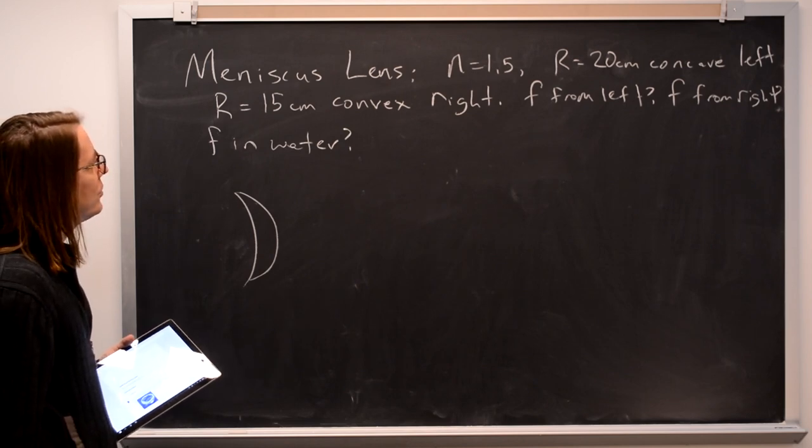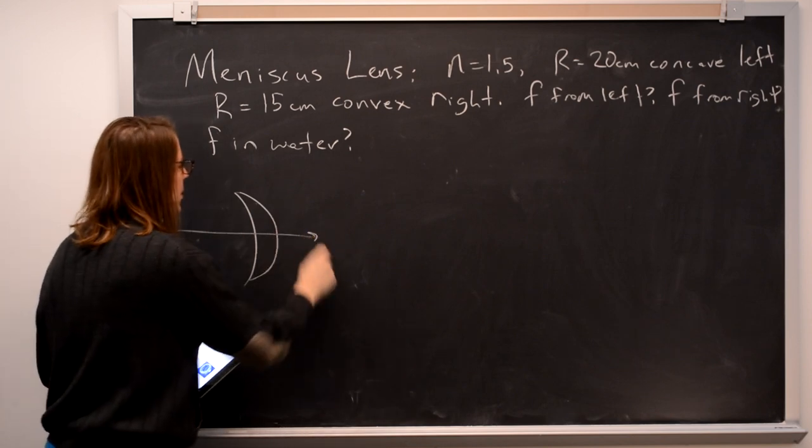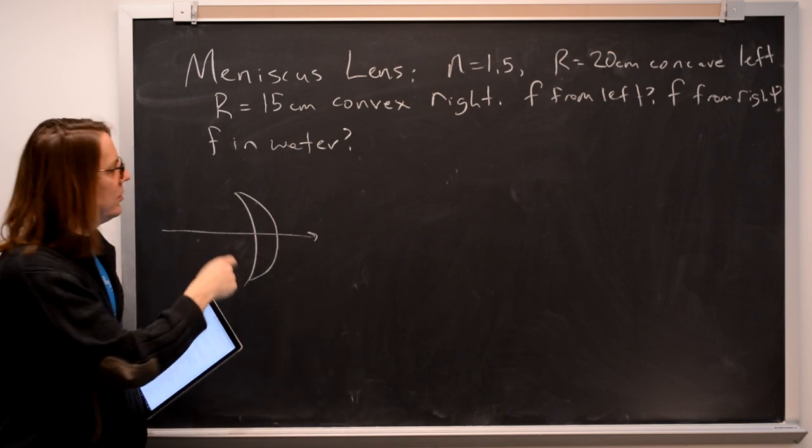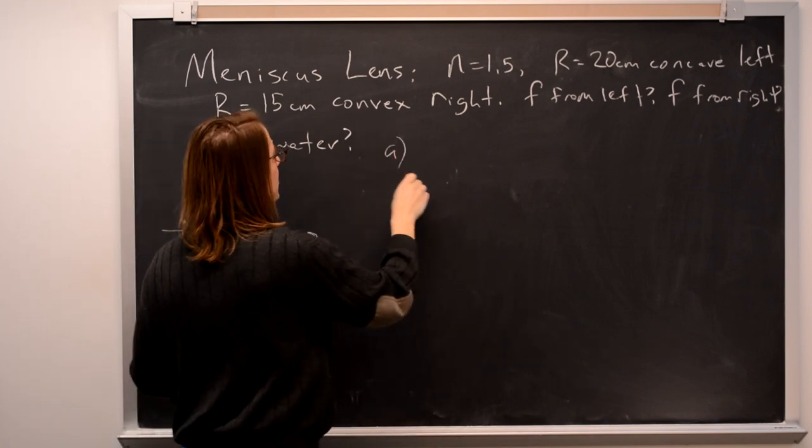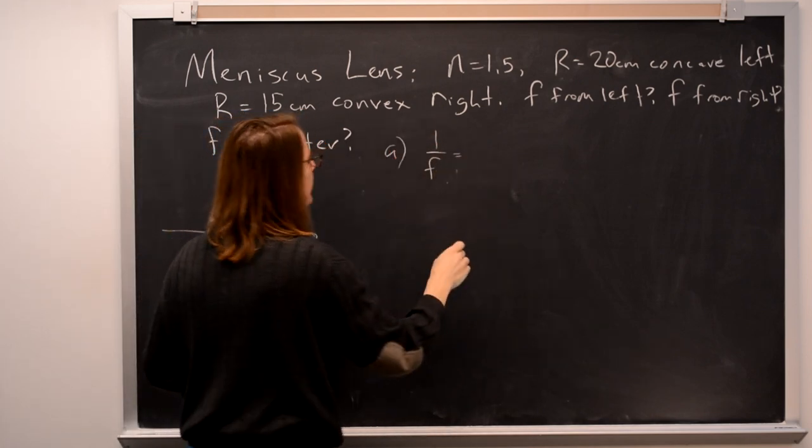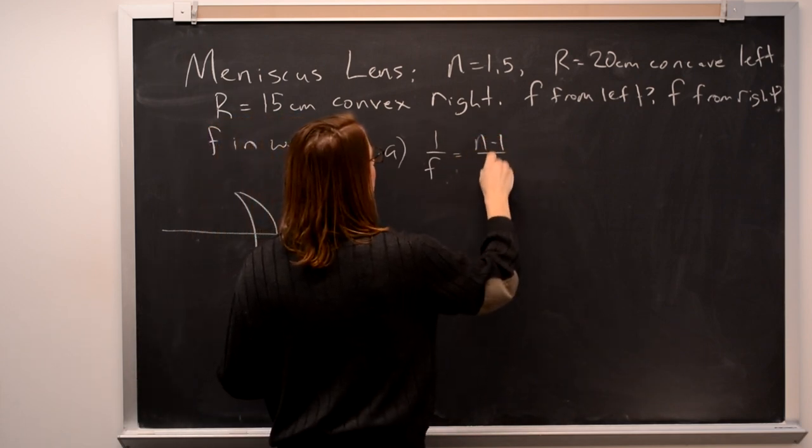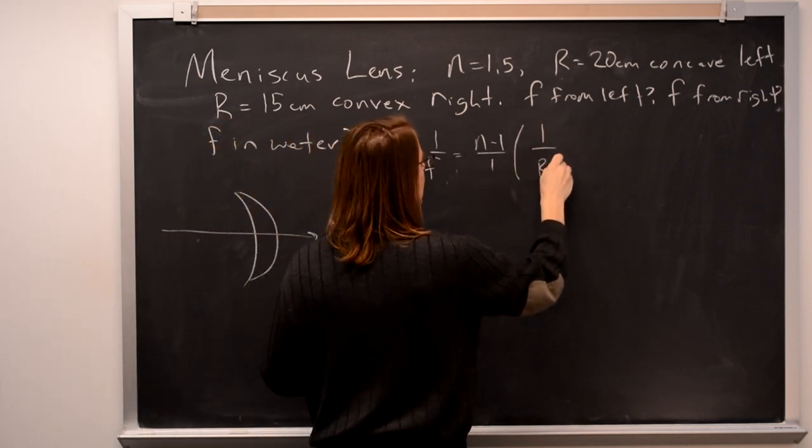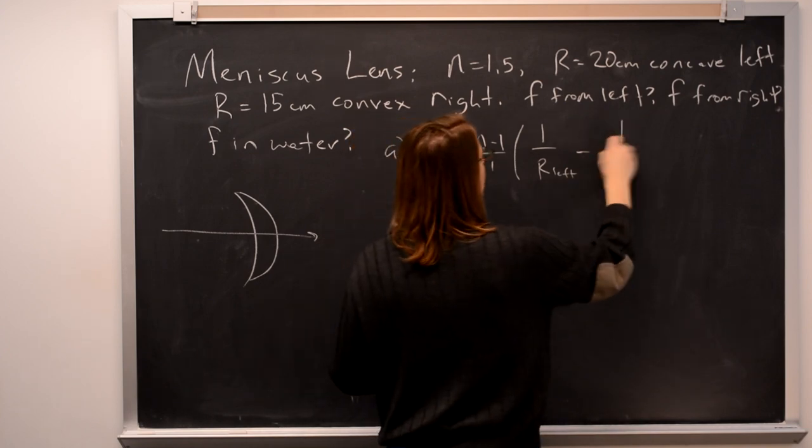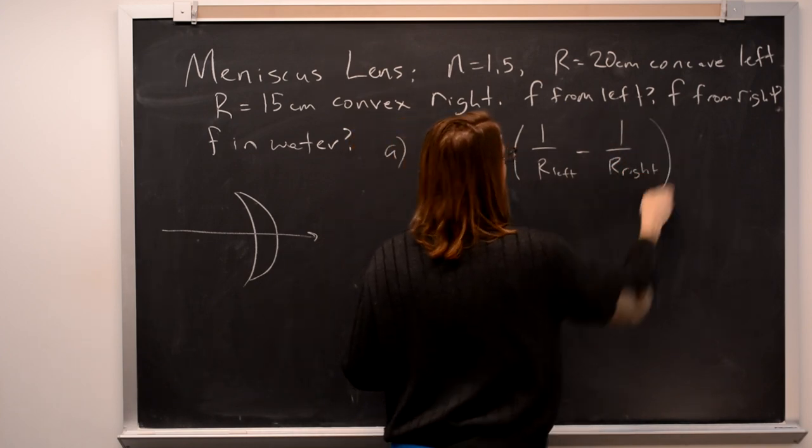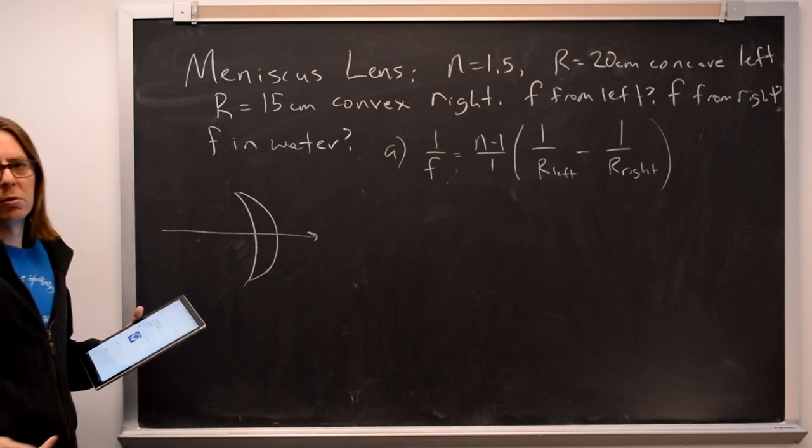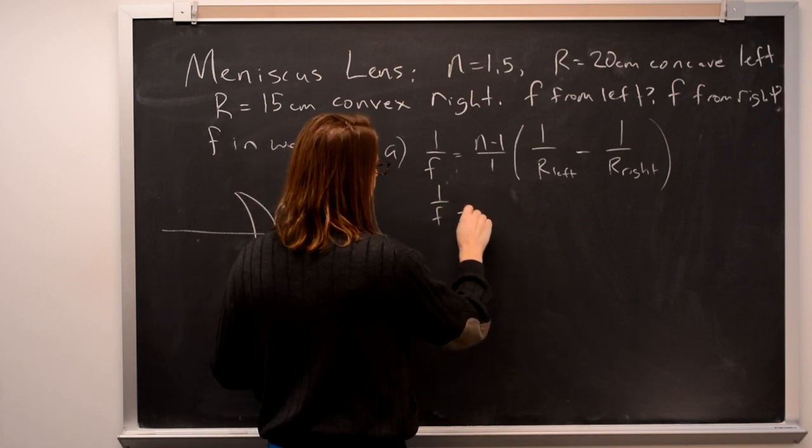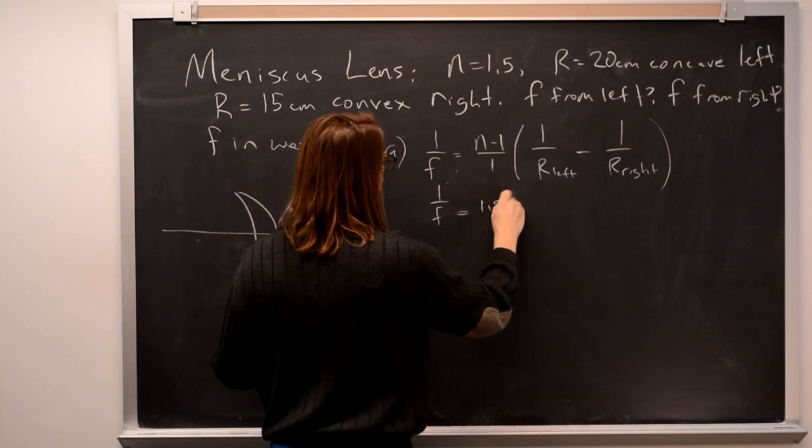So first we want to know the focus from the left. Light going like this, what does it see? Is it going to be a converging lens, or is it going to be a diverging lens? We just apply the formula: 1 over f equals n minus 1 times 1 over r of the left minus 1 over r of the right. Or you might say 1 over r1, 1 over r2.